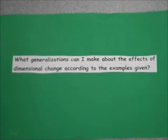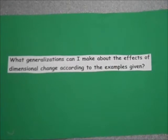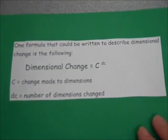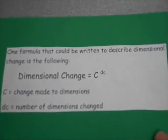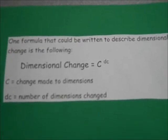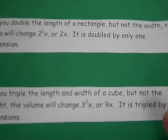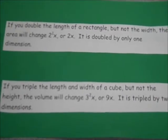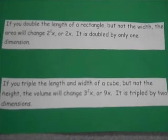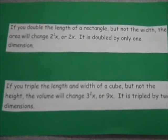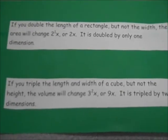What generalizations can I make about the effects of dimensional change according to the examples given? One formula that can be written to describe dimensional change is the following: Dimensional Change = C^dc, where C = change made to dimensions, dc = number of dimensions changed.